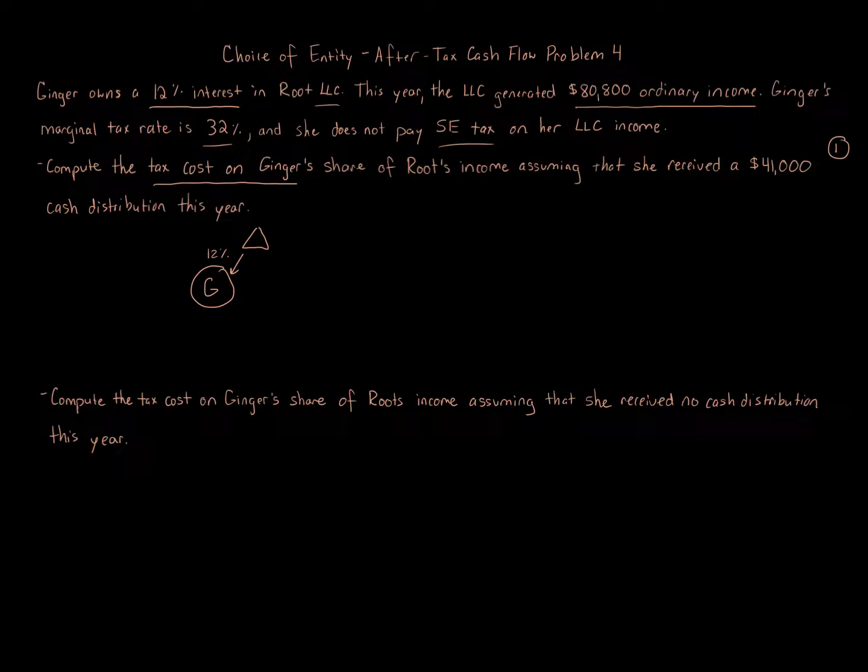Ginger's share of the tax cost. The partnership reports $80,800 of income, so we need to allocate that income. Even though Ginger receives a distribution of $41,000, every year pass-through entities have one level of tax, and that's the allocated items of income, loss, deduction, gain, etc. This is the income that's allocated to the owners of the LLC.